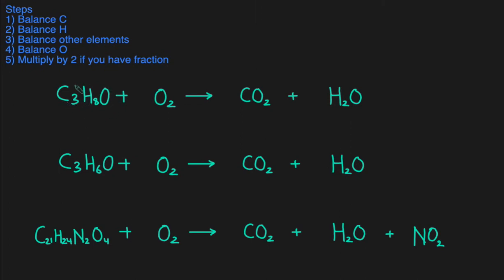This next problem is a little bit different because in this hydrocarbon we also have oxygen, and that's going to change the way we approach the problem slightly. We'll start with the carbons — we have three carbons on the left and one on the right, so we put the three right here. Then we look at the hydrogens: we have eight hydrogens on the left and two on the right, so we put a four in front because four times two gives us eight.